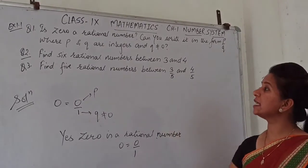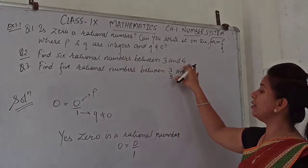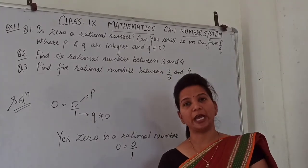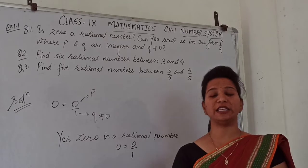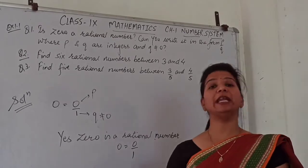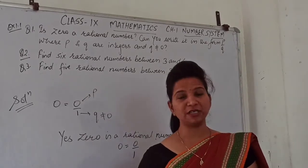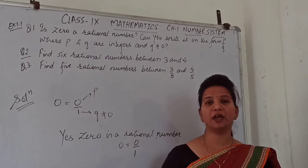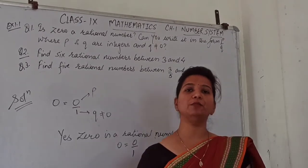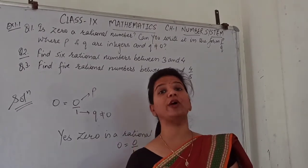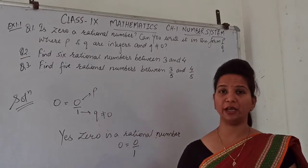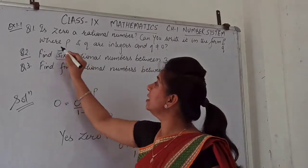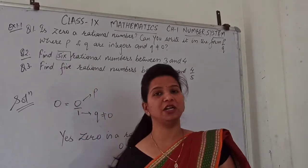Find 6 rational numbers between 3 and 4. In the last video I gave you a statement: between any 2 rational numbers, there are infinite rational numbers. If we have 2 rational numbers, then we have infinite rational numbers between them. And here we need 6 rational numbers.